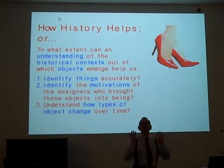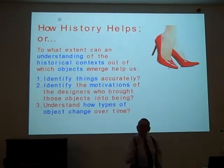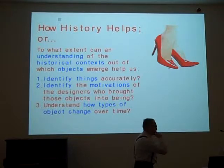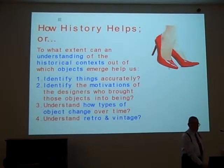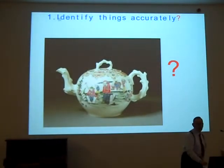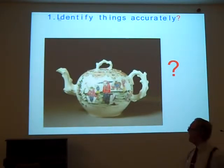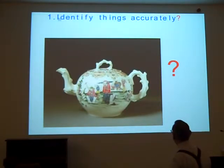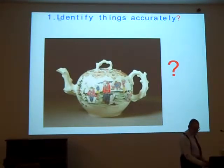Saying 'it's fashionable now' — the question still remains, why? And why like that? So finally: understand retro and vintage. That might be useful. So, identify them accurately. I thought we'd start with an obvious example. Here we have a picture of, evidently, a teapot — and we know it looks like a teapot. It comes from the V&A, and in its catalogue it says it is a punch pot.